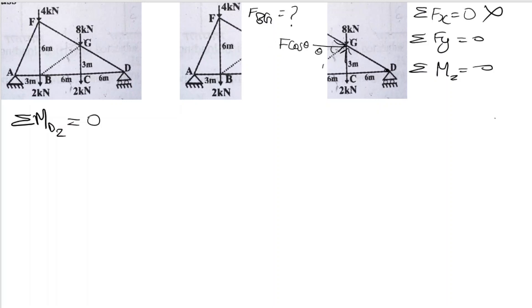How will the moment contributions come? We have F cos θ and F sin θ components for member BG. The F cos θ component with its perpendicular distance — this rotation is clockwise so it is positive. Anticlockwise is negative.